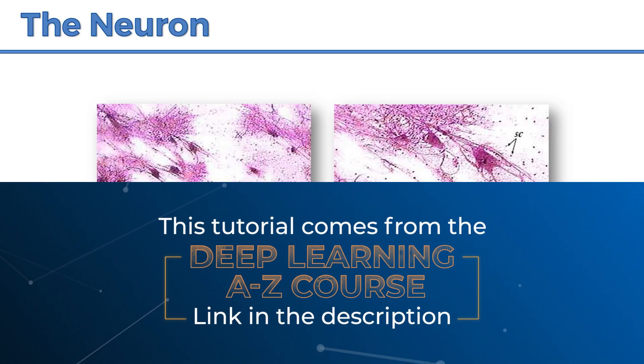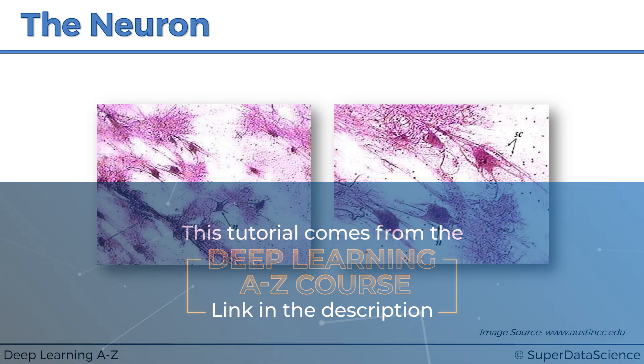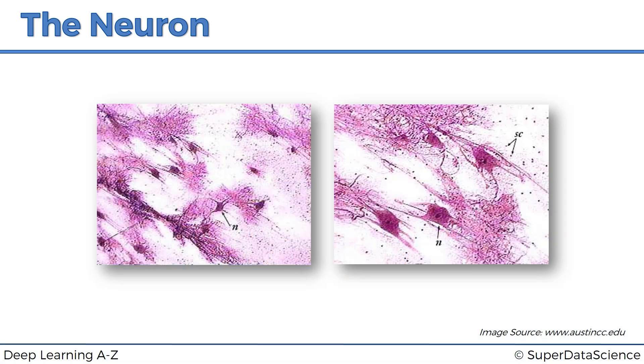Previously we saw an image which looked like this, and these are actual real-life neurons which have been smeared onto a glass and colored a little bit, and they are observed through a microscope. So this is what they look like. Quite an interesting structure, a body and then lots of different tails, branches coming out of them.